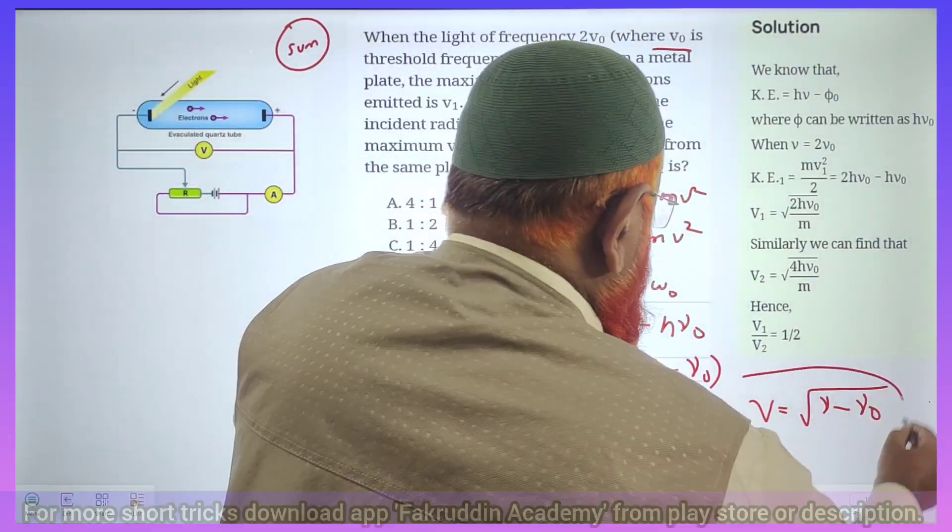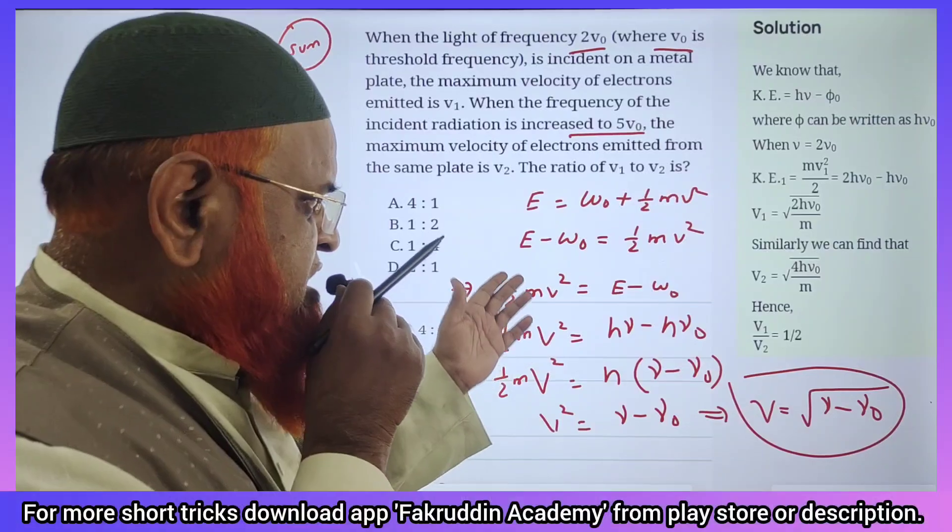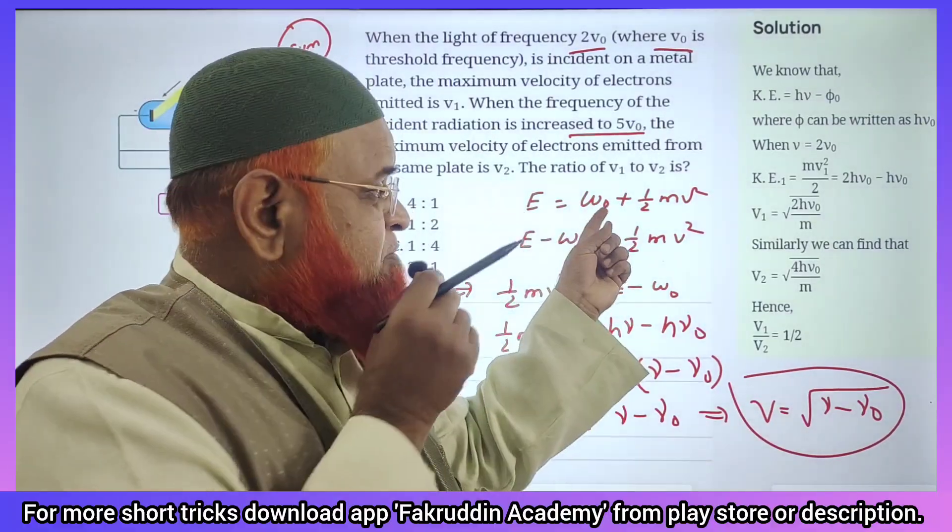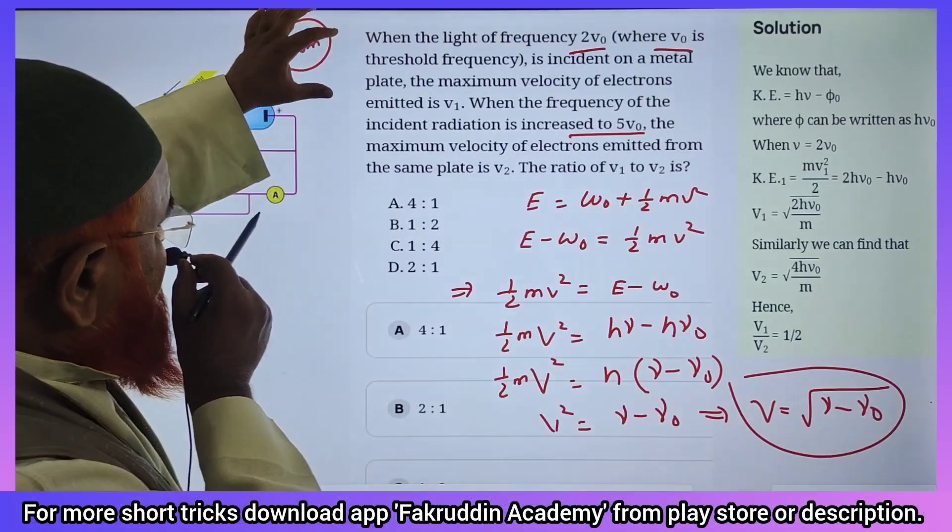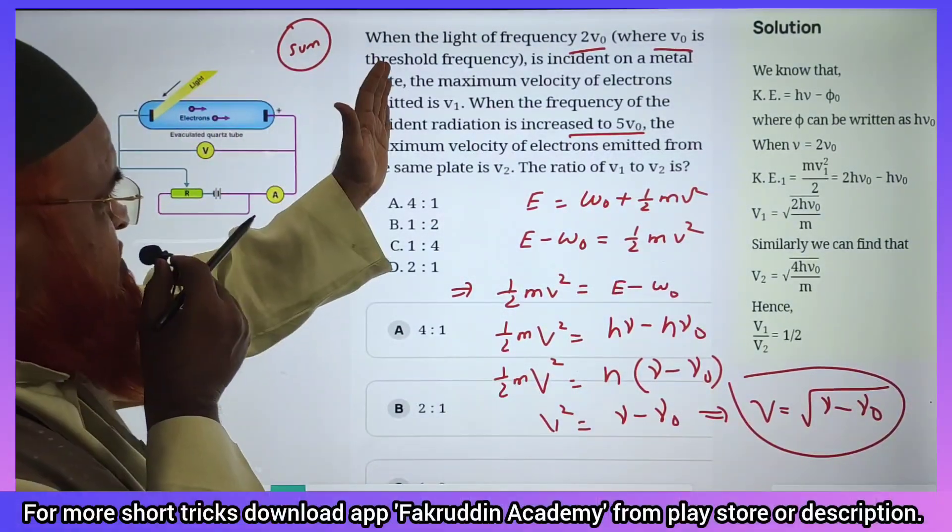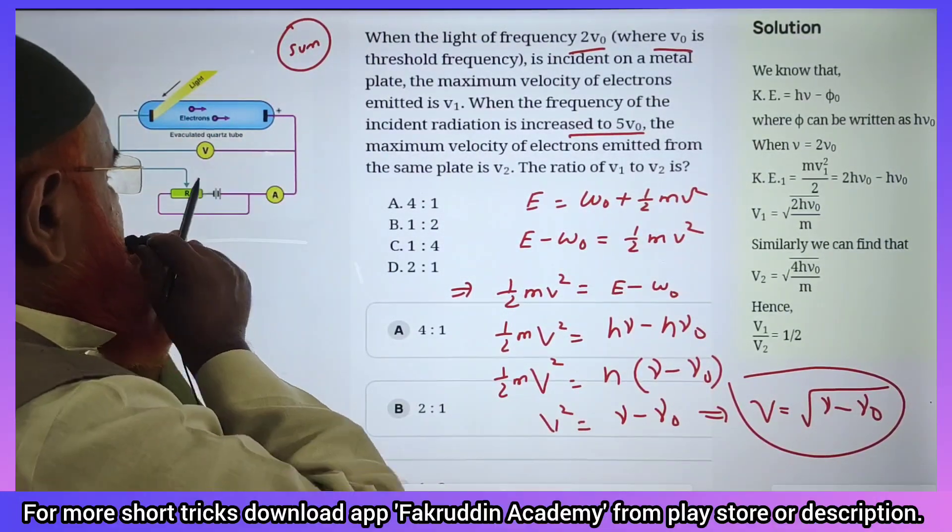The concept here is from the photoelectric equation we get energy coming from the sun is equal to work function plus kinetic energy. When the light coming from the sun falls on the metal plate, electrons will come with high velocities.